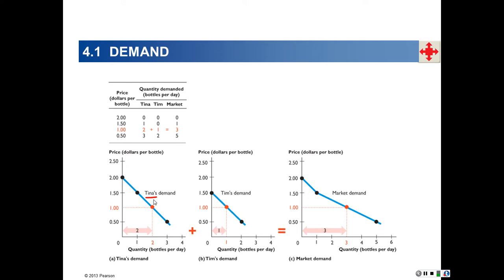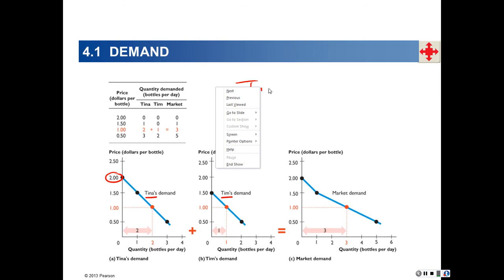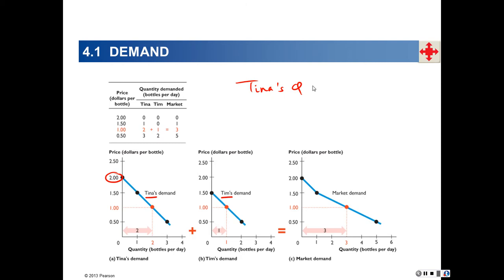This is demonstrated right here. We have two individuals — Tina and Tim — and these are their demand curves for bottled water. At a price of two dollars, what would their combined quantity demanded be? That's Tina's quantity demanded plus Tim's quantity demanded. At a price of two dollars, the sum is zero — because Tina buys no water and Tim buys no water either.